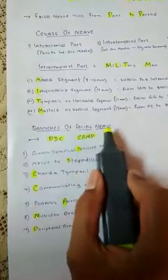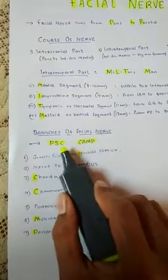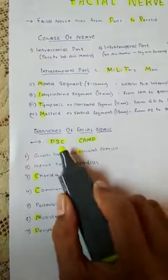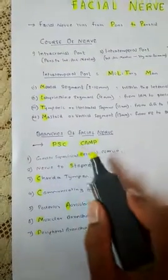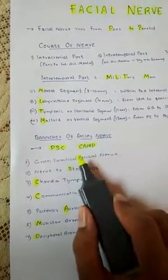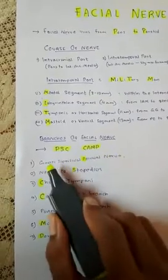Now, the branches of facial nerve can be remembered by the mnemonic PSC CAMP. P stands for petrosal nerve. The first branch is the greater superficial petrosal nerve.